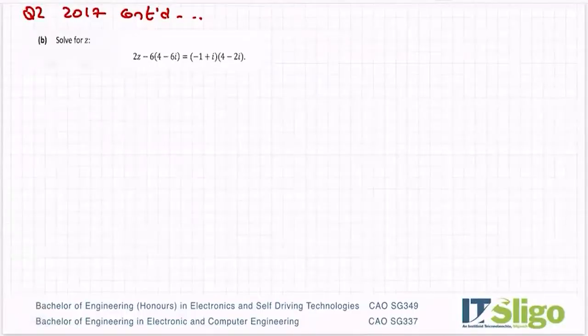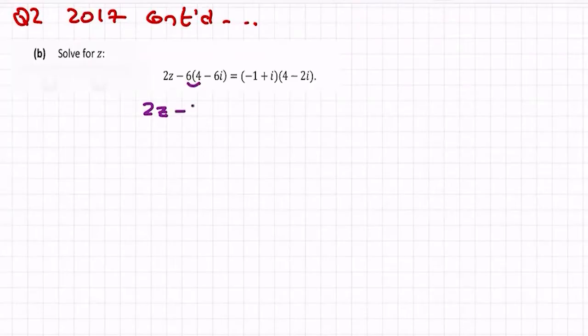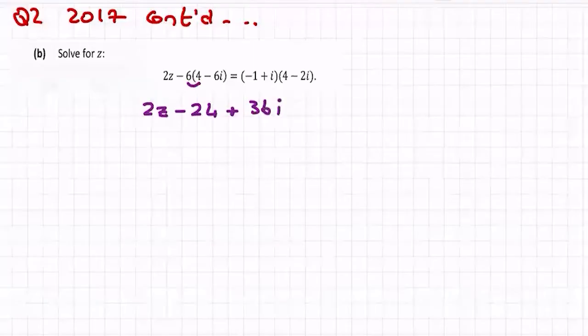Finally in this question it said solve for z. 2z minus 6 times 4 minus 6i is equal to minus 1 plus i times 4 minus i. So let's work this out like we would any other algebra type question. So we have 2z, and then we have minus 6 times 4: 6, 12, 18, 24. And then we have minus by minus, there being a plus, and you have 6, 6s, 36i.